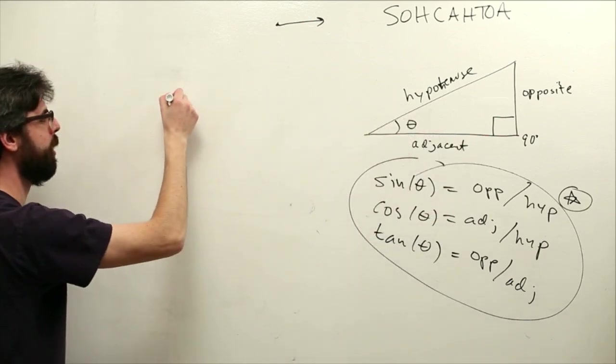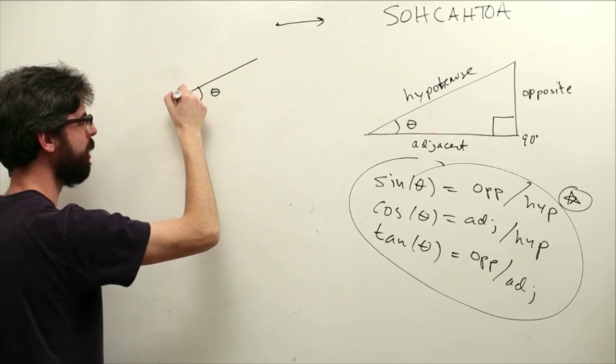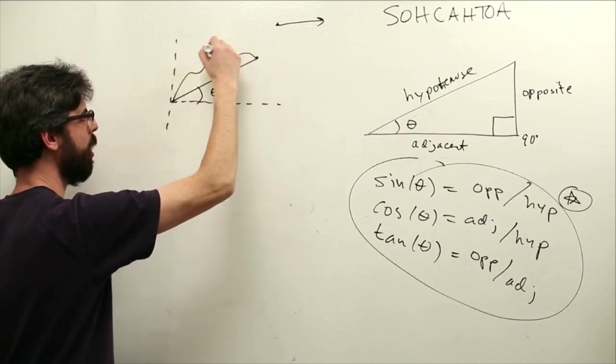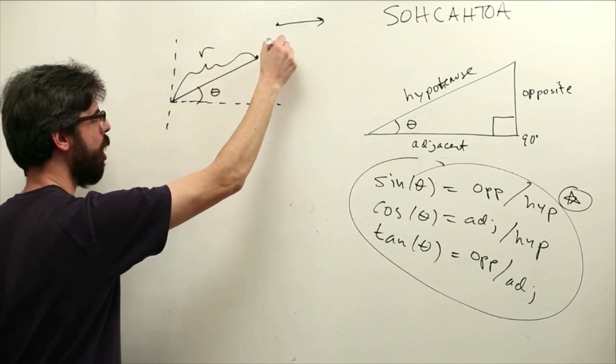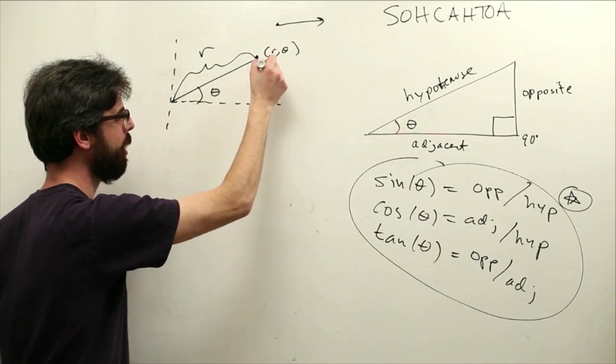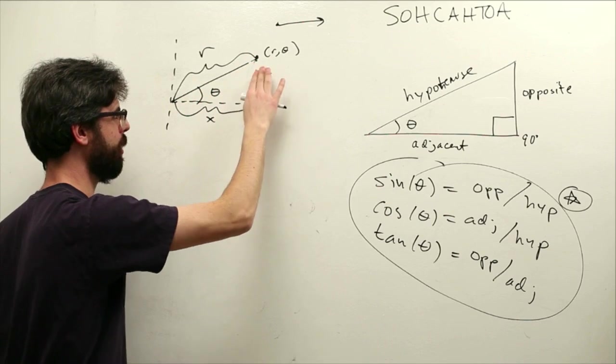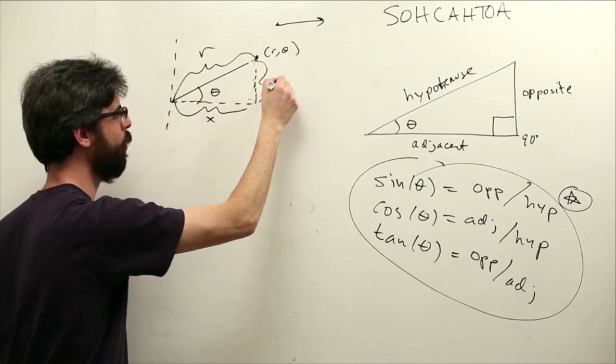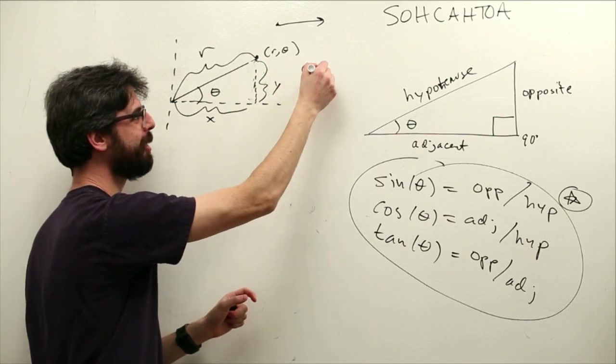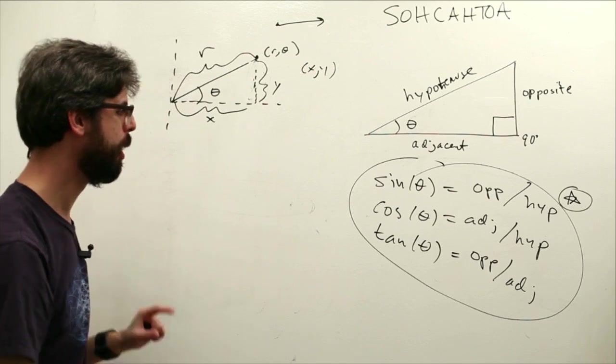Let's say we know something is at a particular theta with a particular r. So this is my polar coordinate r, theta. Well, this is the y value and this is the x value. Boy, did I draw that terribly. We can make a right triangle. The Cartesian coordinate is x, y. If we know r, theta, how could we get x, y?